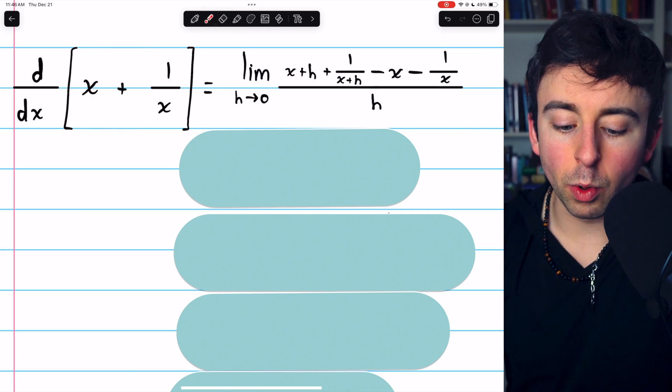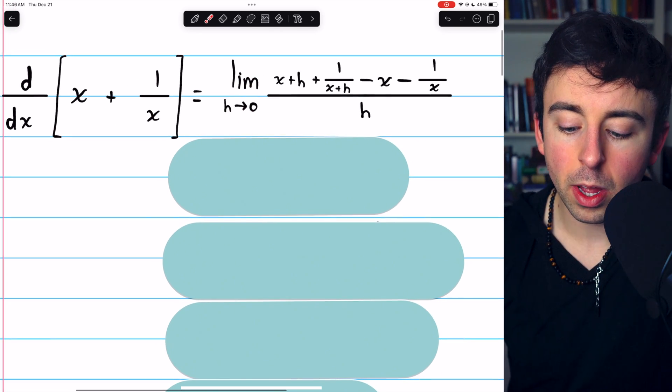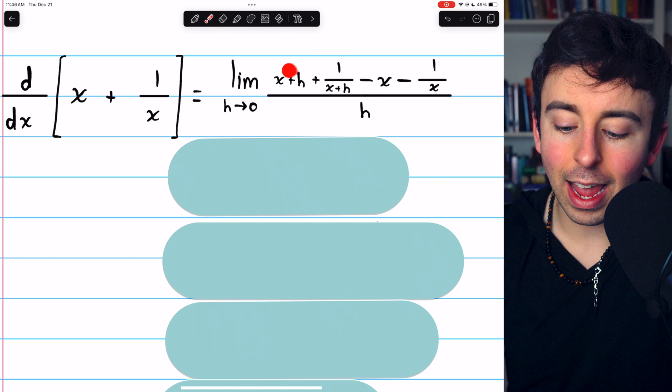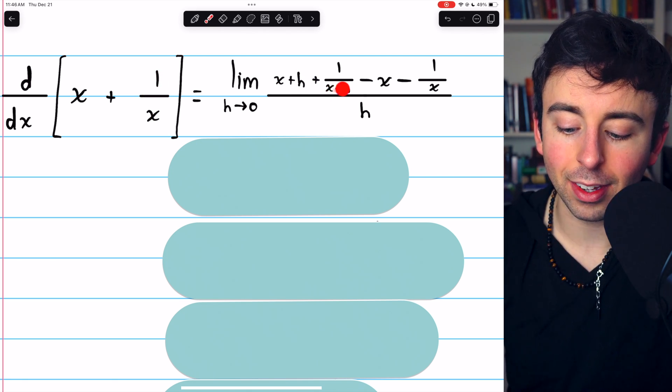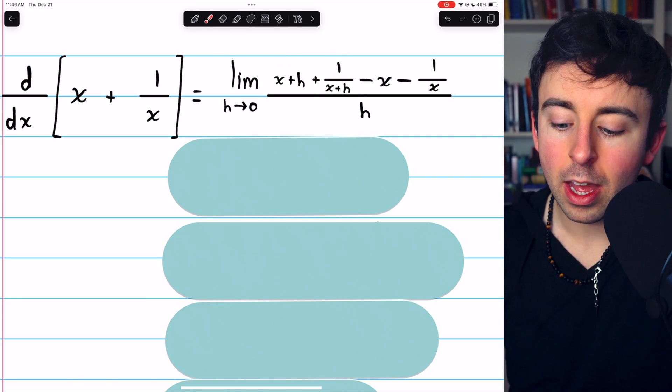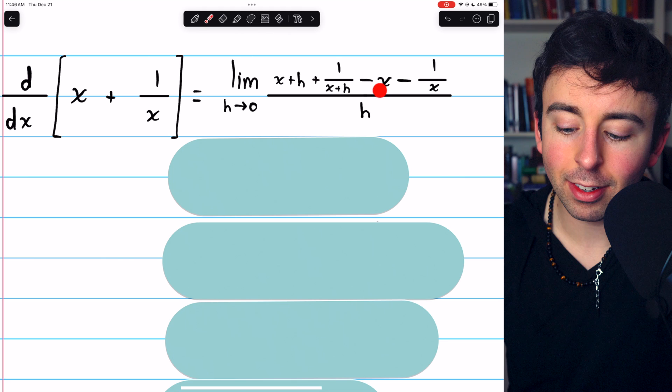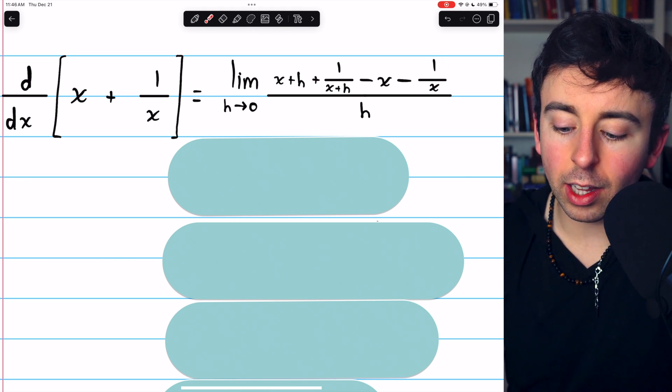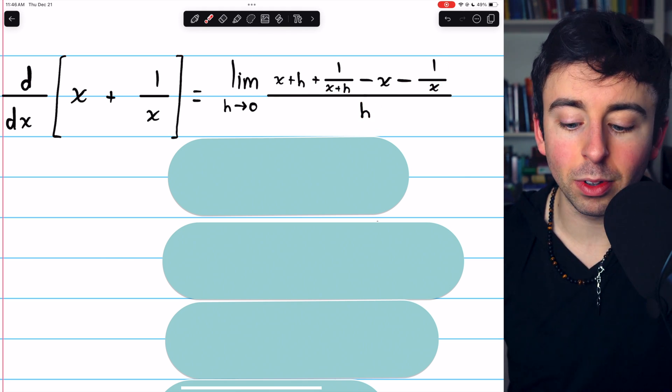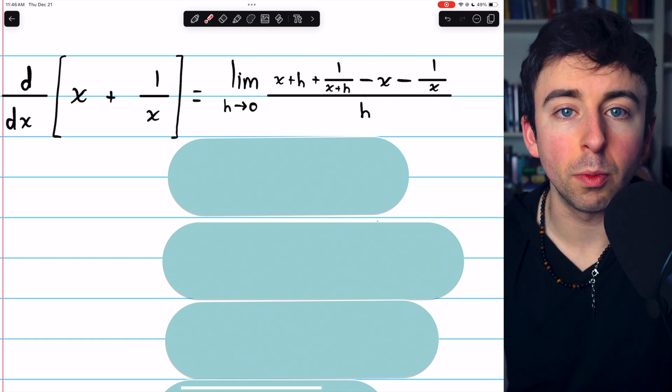By definition, the derivative of this function is the limit as h approaches 0 of x plus h plus 1 over x plus h, so that's the function evaluated at x plus h, minus the function evaluated at x, so minus x minus 1 over x, and all of this is divided by h. So this is just that limit x plus h definition of the derivative you should be familiar with.